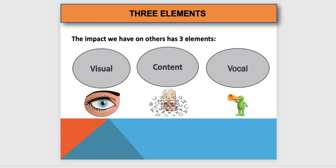Visual means what people can see — pointing to a sign so they can see where the toilets are without you saying a word. Content is what you're telling them — make sure it's factual, understandable, and exactly what they need to hear. Vocal means how you say it — don't be timid or passive, but don't be aggressive either. Be assertive. Aggression will only make them more aggressive.